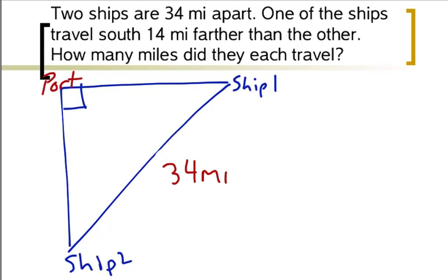Alright, now in this lesson we're going to take a look at another triangle problem, but it has a little bit more application. We're talking about two ships. It says they're 34 miles apart.